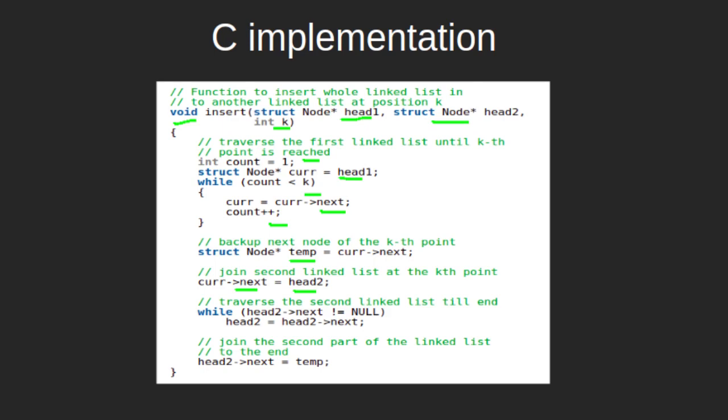After this, using the head of the second linked list, we traverse the second linked list till the end. When we reach the end of the second linked list, the last node of the second linked list is connected to the (k+1)th node of the first linked list. This is done by updating the next of the last node of the second linked list with temp, which points to the (k+1)th node of the first linked list. This completes our algorithm.